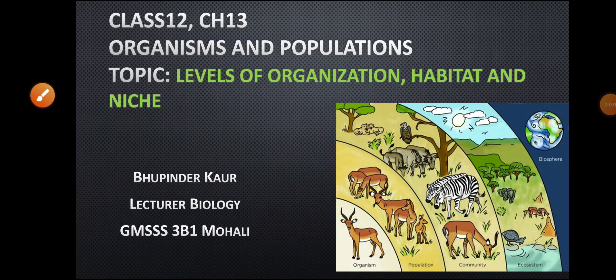Hello students, today we will be starting chapter 13th, that is Organisms and Population, of the last unit which is left. The name of the unit is Ecology. In ecology we have total 4 chapters but 2 chapters have been deleted by the board, so we are left with 2 chapters only. The first chapter is Organisms and Population and the second chapter is Biodiversity and Conservation. Today we will be doing the first topic, that is levels of organization, and the very important topic habitat and niche.